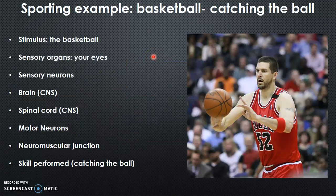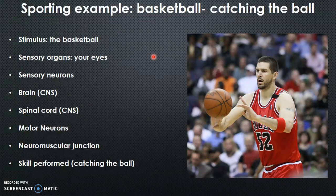An example of this could be catching a ball in basketball. The basketball will be the stimulus and your eyes will be the sensory organs. Your eyes will send a signal to the brain, which is part of the central nervous system. This happens through sensory neurons and down the spinal cord, which is also part of the central nervous system. The impulse then reaches the motor neurons where saltatory conduction happens and the action potential reaches the neuromuscular junction. Then the sliding filament theory occurs, and the skill is performed — in this case, catching the ball.